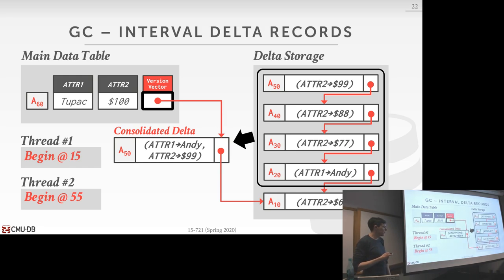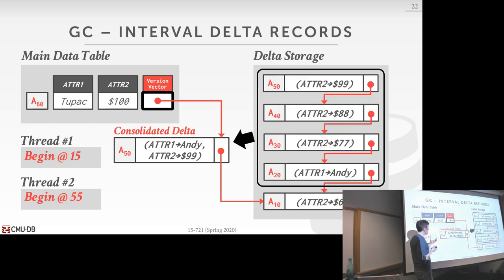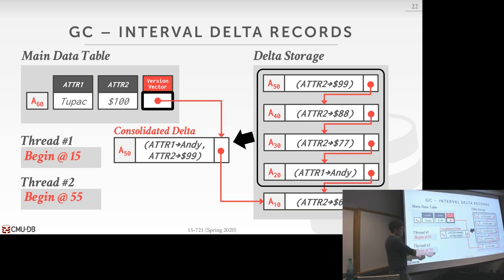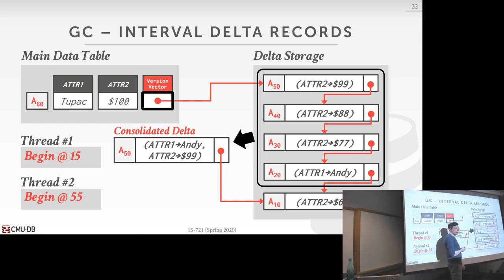A student proposed: instead of consolidating into a new record, could you just remove the intermediate records for the same attribute and keep the latest one, updating only the pointer? That would work. You'd have two records with both changes rather than one consolidated record, which might mean more pointer traversals. But both approaches are valid.